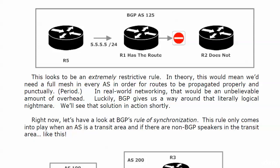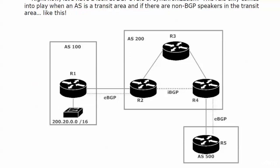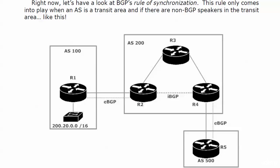But right now, while we're at this, I want to show you BGP's rule of synchronization. This doesn't come into play a lot. As you'll notice on the board, this rule only comes into play when an AS is a transit area and if there are non-BGP speakers in the transit area. So you're not going to see a ton of that, but you might see something like what we see on the board here. AS 200 is a transit area between AS 100 and AS 500.